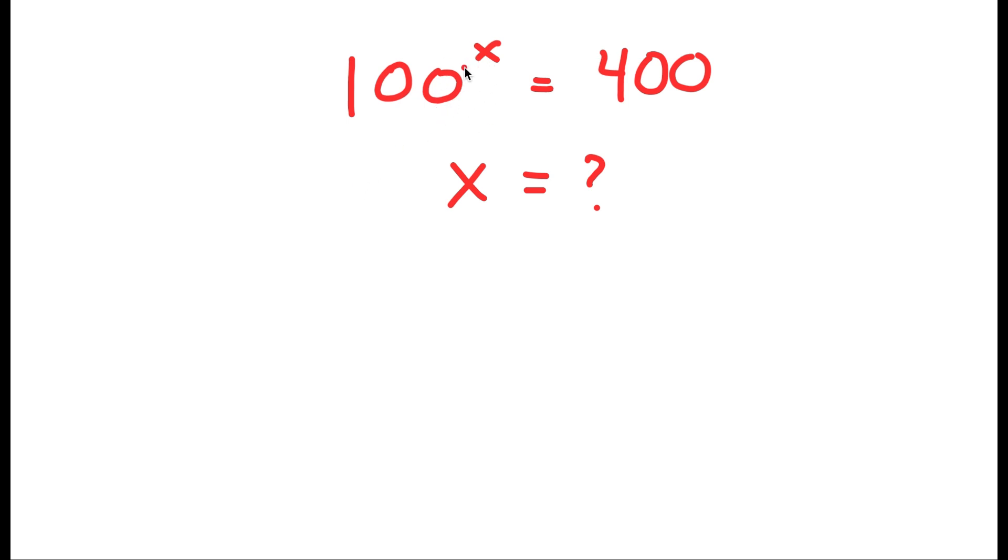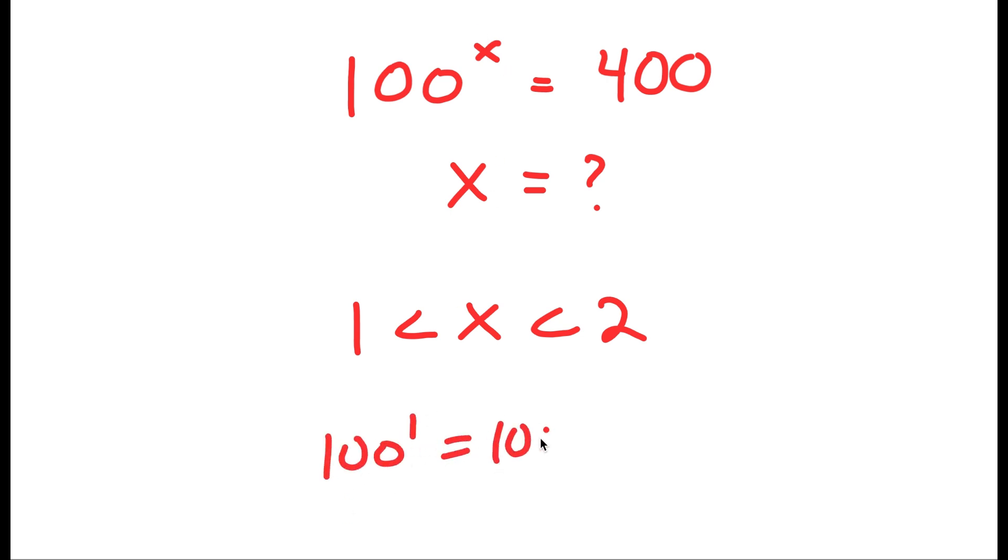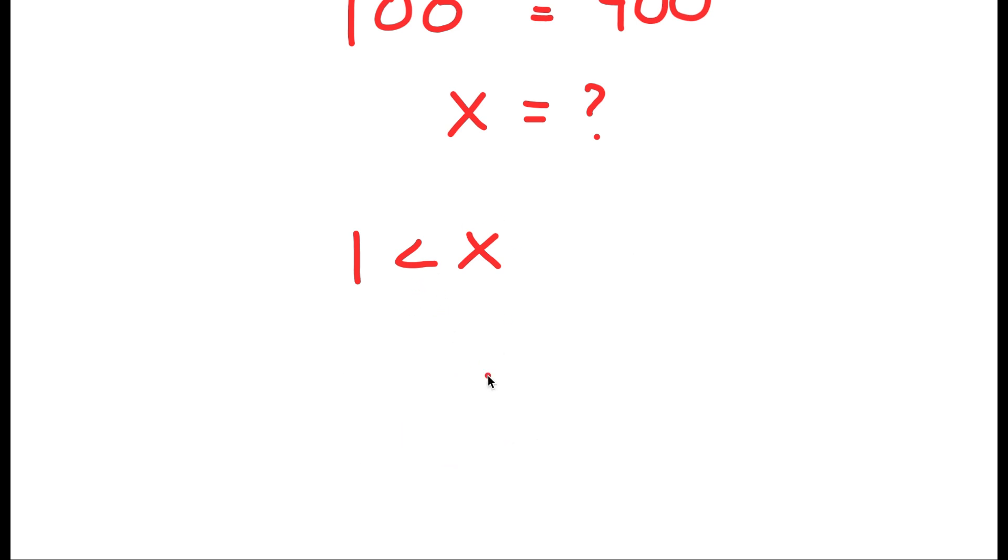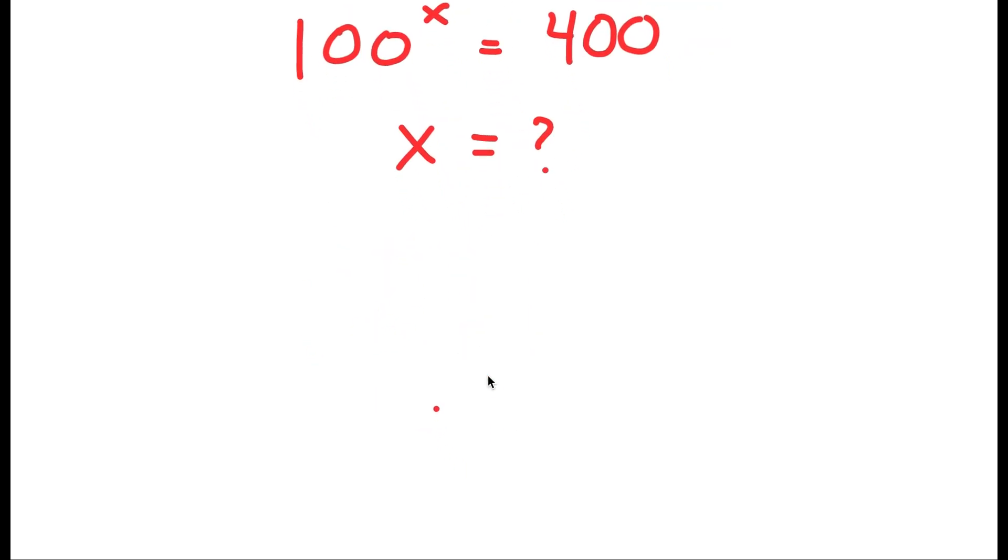We see that x is going to be in between 1 and 2, because 100 to the power of 1 is 100 and 100 to the power of 2 is 10,000. So it's going to be more closer to 1 than it is 2, but it's going to be somewhere in the range of 1 and 2. So to solve this, what I'm going to be using is logarithms.